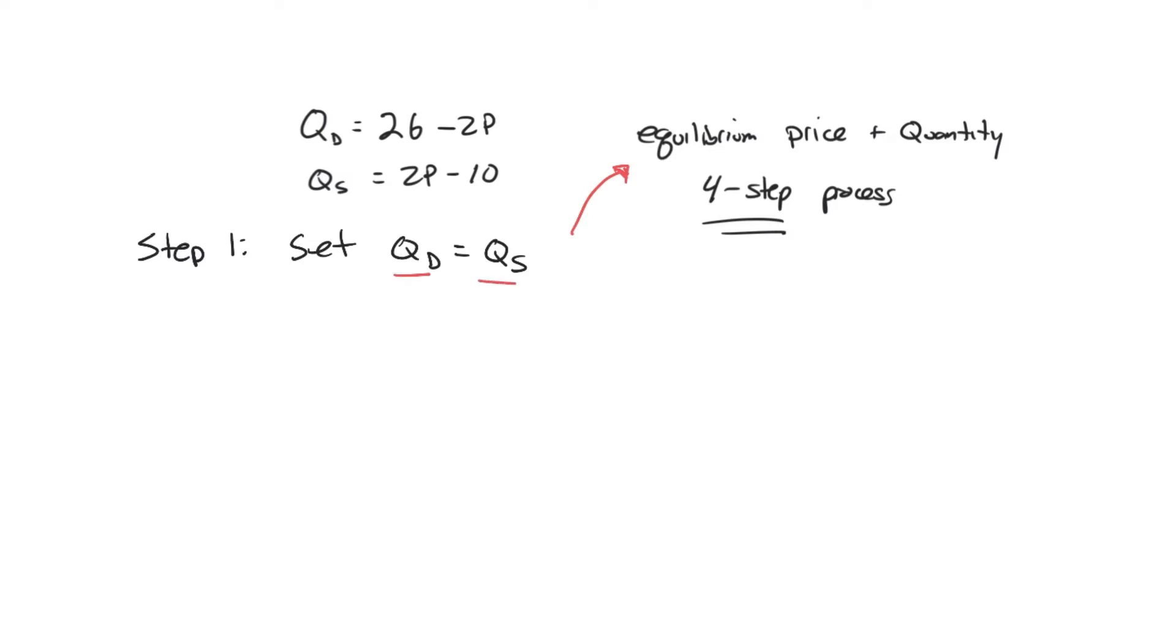So you're going to set that equal: 26 minus 2P is what our quantity demanded is, set it equal to 2P minus 10. And what we'll notice now is we only have one variable. We only have price left over.